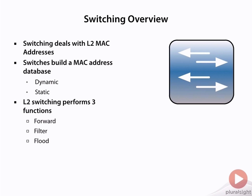Layer 2 Switching is going to perform three basic functions: it'll make forwarding decisions, filtering decisions, or flooding decisions, depending on what's happening with the frame and how the MAC address database looks when the switch sees a frame.